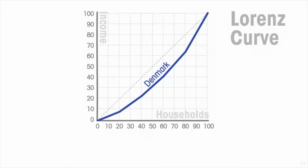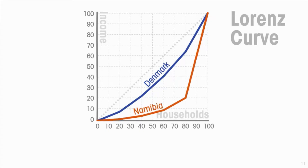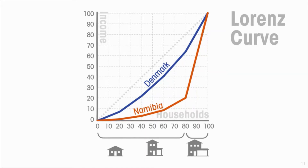Here's the Lorenz curve for Denmark, which has one of the most equal distributions of income in the world. At the other end of the spectrum is Namibia, which is one of the more unequal. We see it reflected in how far Namibia's Lorenz curve diverts from the diagonal compared to Denmark's. The poorest 80 percent of households in Denmark earn around 64 percent of the income, whereas the poorest 80 percent in Namibia earn only 20 percent.